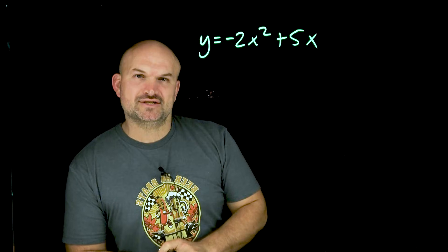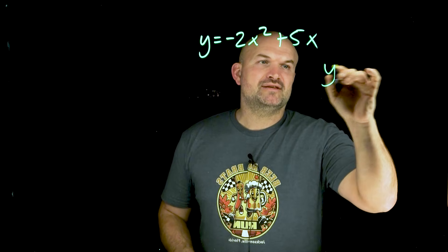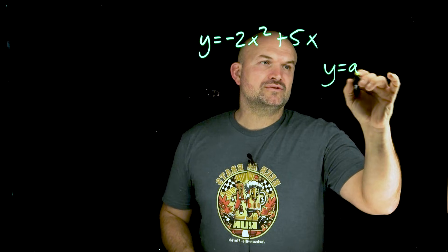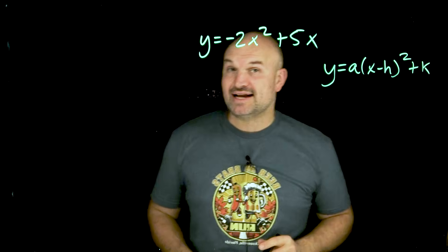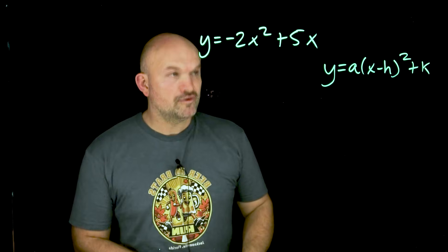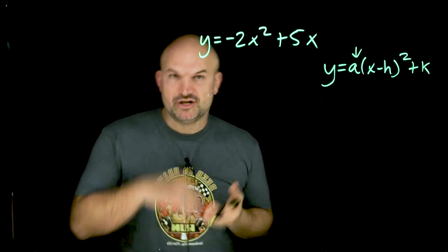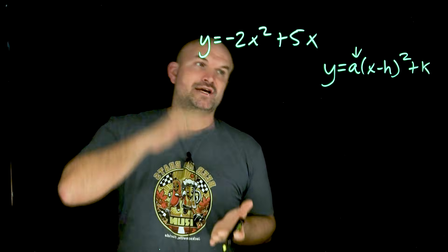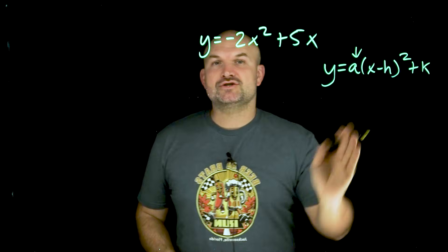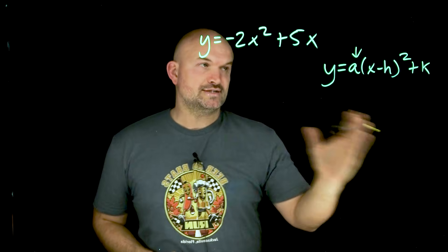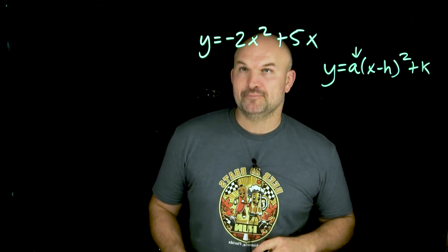First, we need to understand that when we're trying to identify transformations, we want a quadratic to be in the form y equals a times the quantity x minus h, squared, plus k. That is going to be our vertex form, where a is going to be our vertical stretch as well as compression, and a is also going to reflect about the x-axis. H is going to be your horizontal shift left and right, and k is going to be your vertical shift up and down.